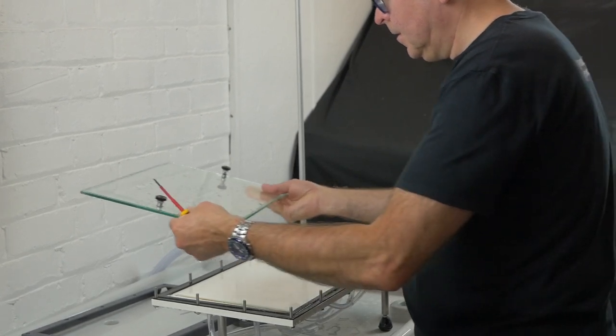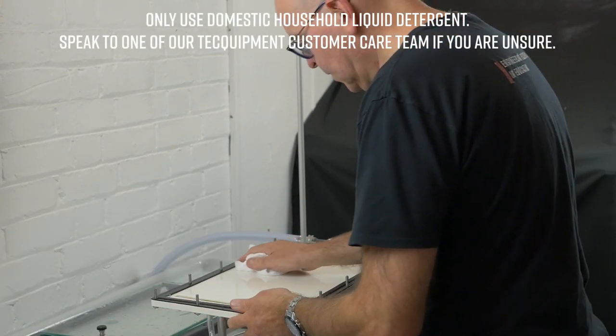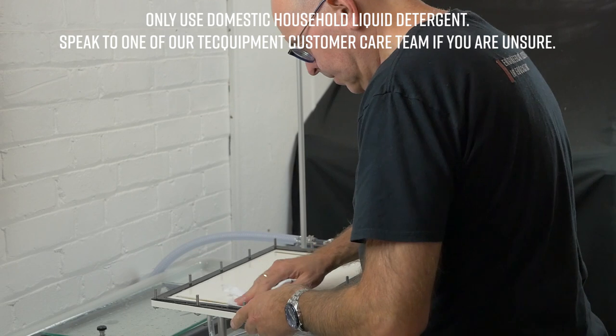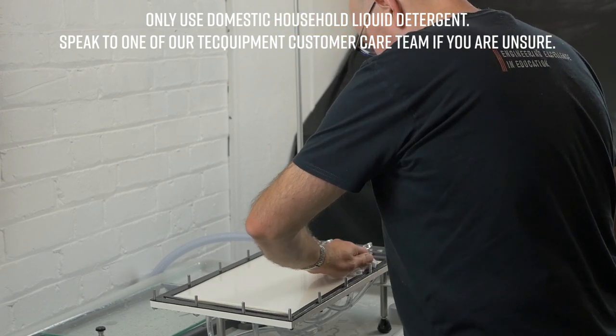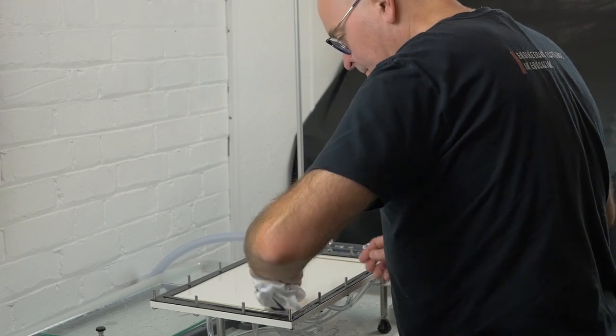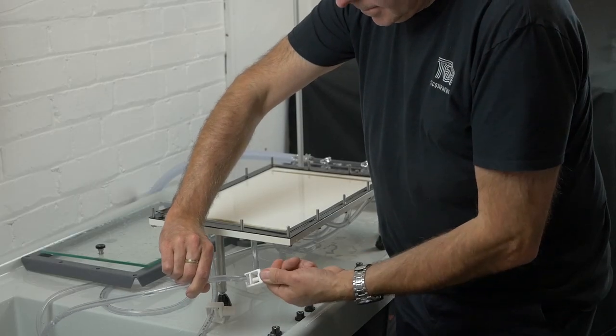Remove any unwanted grease from the inside of the glass and the channel surface with a clean cloth and a weak solution of detergent and water. This also allows trapped bubbles to move easily along and out of the channel. When cleaning, take care not to block any of the small holes or scratch the surfaces.